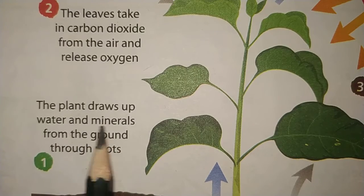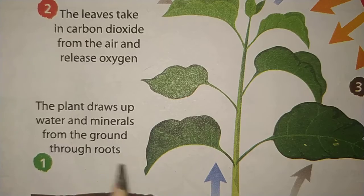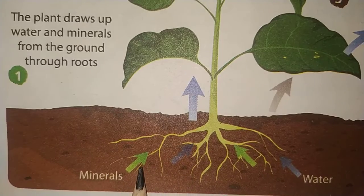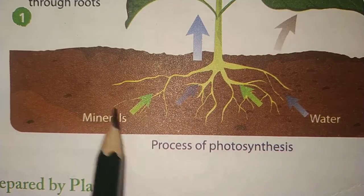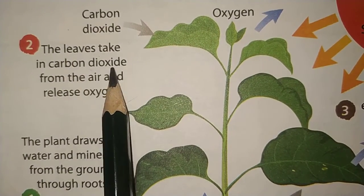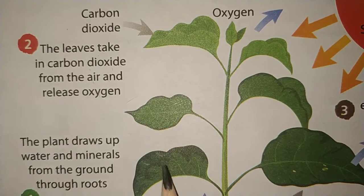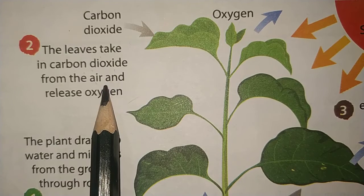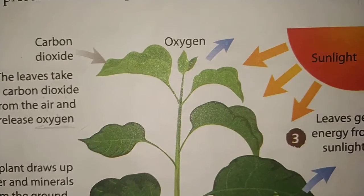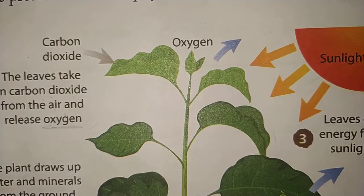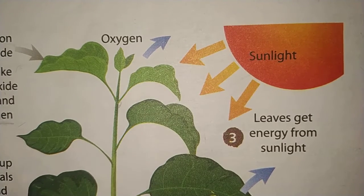In photosynthesis: the plant draws up water and minerals from the ground through roots; the leaves take in carbon dioxide from the air and release oxygen; sunlight provides energy. So the plant absorbs minerals from the soil, carbon dioxide from the air, and water through the roots, uses sunlight for energy, and releases oxygen.